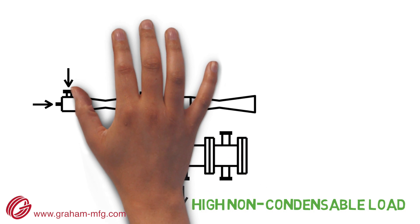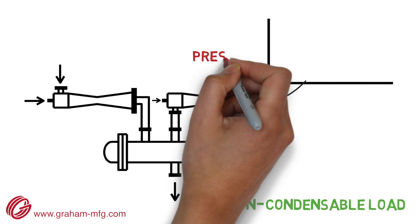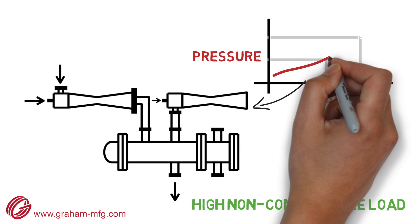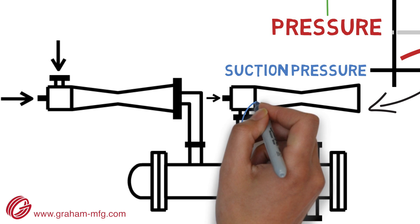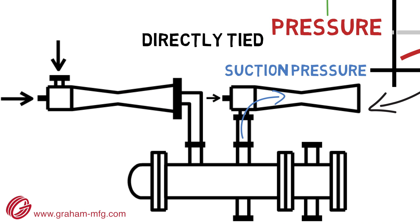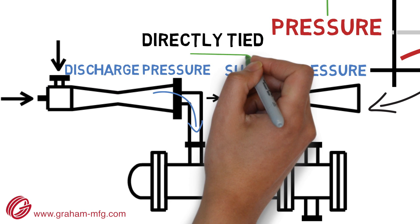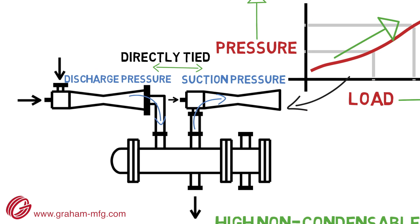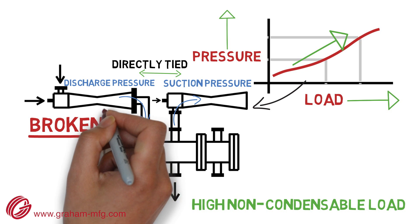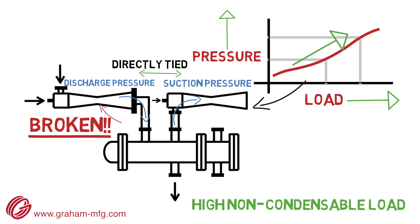The added non-condensable load to this last stage ejector will cause this ejector to ride up its performance curve, which will increase the suction pressure as a result. The suction pressure for this ejector is directly tied to the discharge pressure on the ejector upstream. The discharge pressure for the upstream ejector will increase accordingly. This above-design discharge pressure will cause a break of all upstream ejectors and will significantly degrade the system's suction pressure.